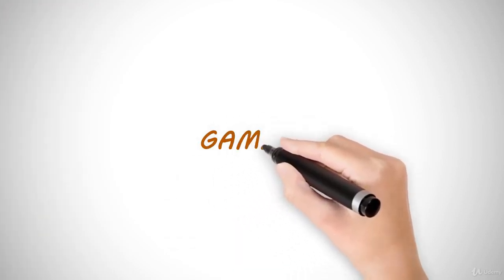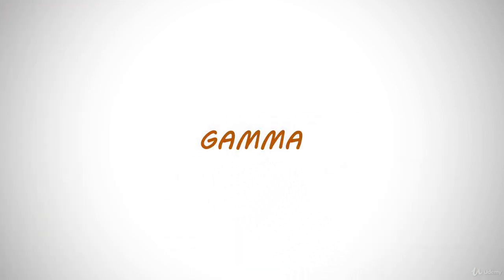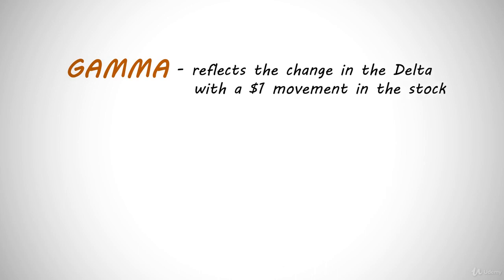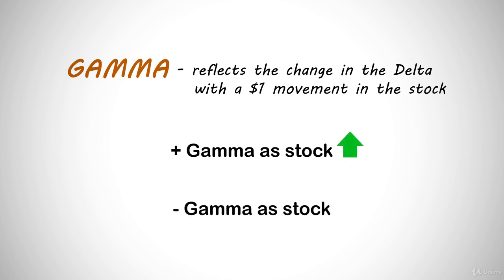Another thing that has to be considered: as the stock price changes, so does the delta. If a stock goes from $60 to $70, the call options are all going to have higher deltas, and the puts are all going to have lower deltas. We can track this with our next Greek, gamma. Like the delta, the gamma reflects the change in the delta with a $1 movement in the stock. Whether you're trading calls or puts, you always add gamma to the old delta as the stock rises, and subtract the gamma from the previous delta as the stock drops. Gamma has the largest effect with at-the-money options, and decreases in value the further the stock moves away from the strike price.